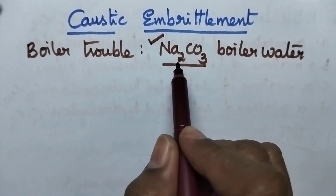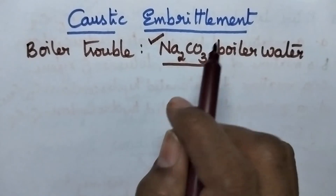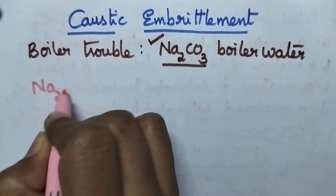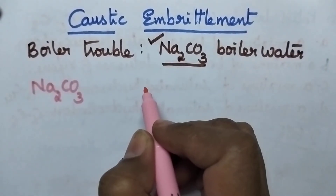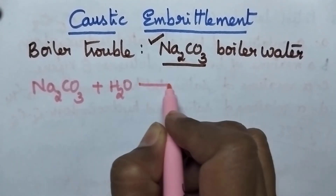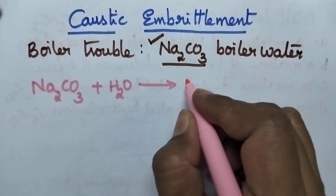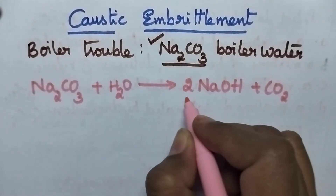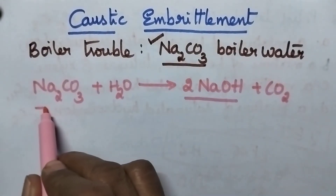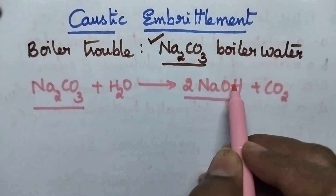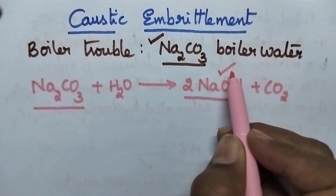Let us see what happens when soda is present in the boiler water. If soda is present in the boiler water, the water will be boiled continuously. At high temperatures, this sodium carbonate reacts with water and leads to the formation of sodium hydroxide. Due to the presence of sodium carbonate in boiler water, it results in the formation of sodium hydroxide, which is an alkali.